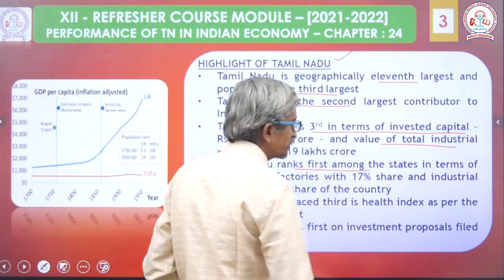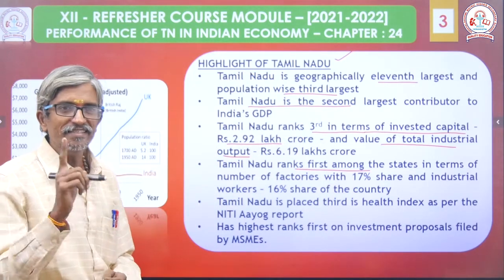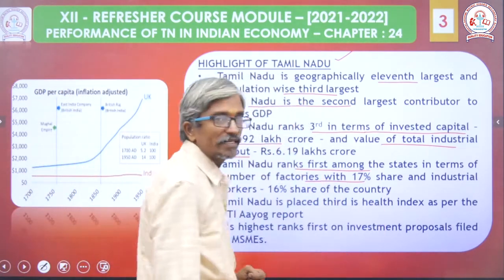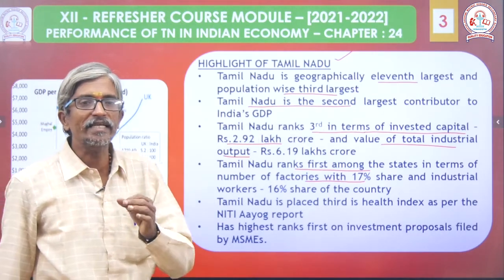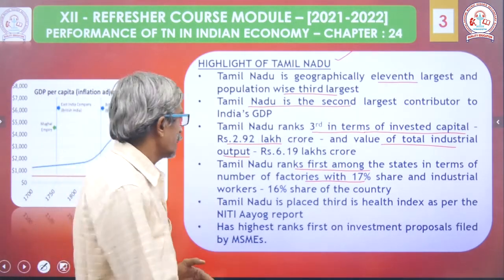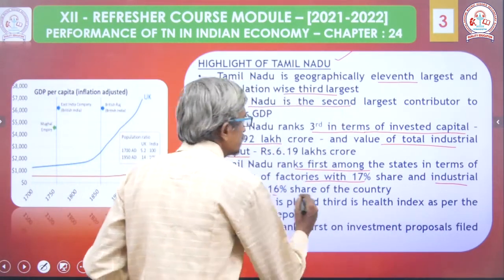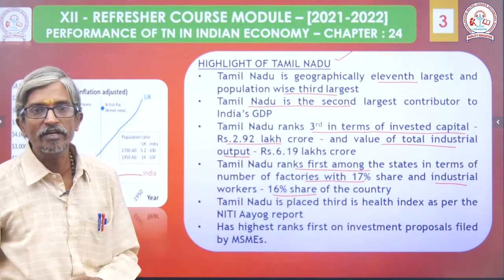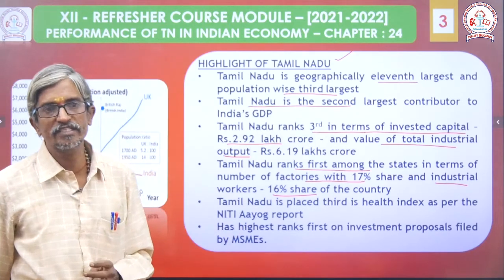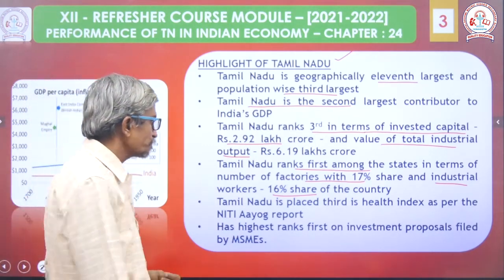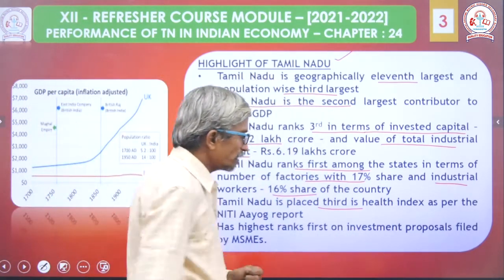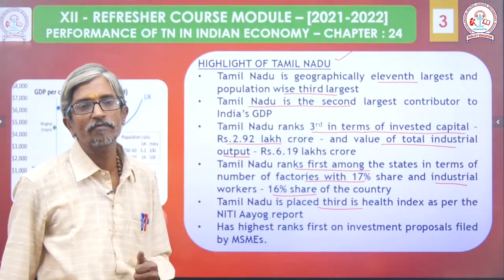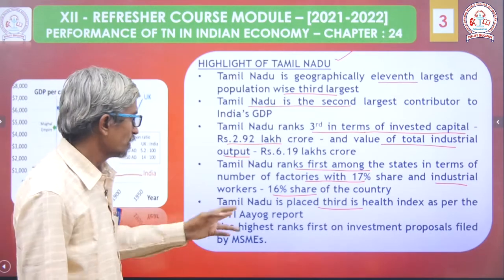Tamilnadu ranks first among the states in terms of number of factories — we have a 17% share. Industrial workers account for 16% of the national total. Tamilnadu also holds third place in the health index as per NITI Aayog — the National Institution for Transforming India.